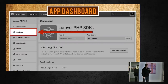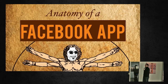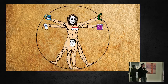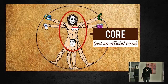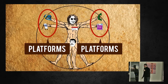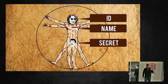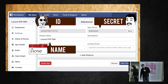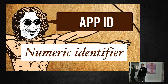On the left-hand side there's a tab called Settings, where you can see more information about your app. The anatomy of a Facebook app: you have core attributes — app ID, name, and secret — plus the platforms you can integrate with. The name is created by you. The app ID is a numeric identifier generated by Facebook — it's a long one, and it doesn't have to be kept secret. You actually use it when you initiate the JavaScript SDK.